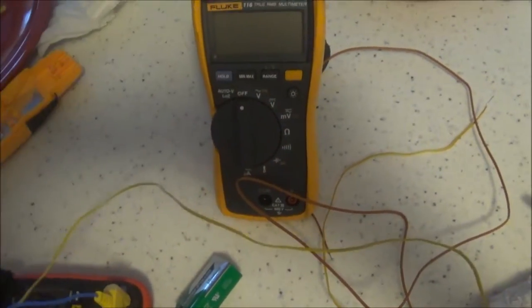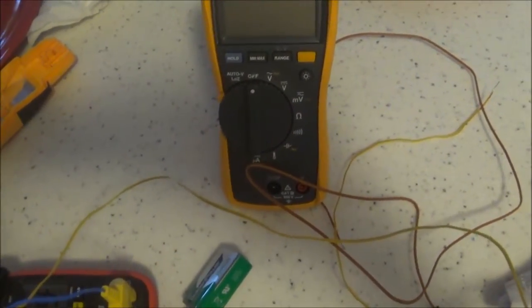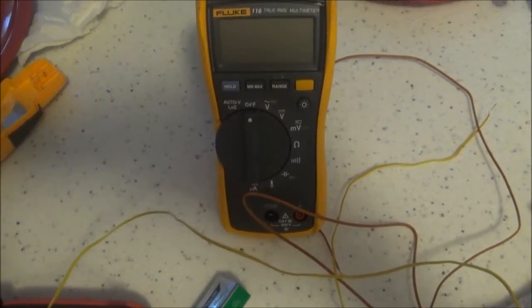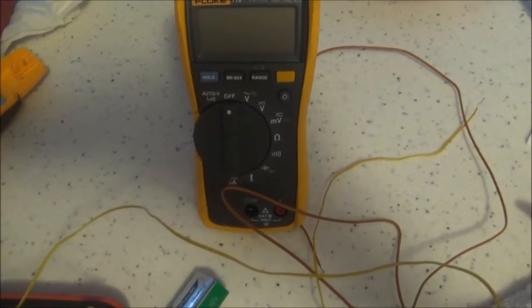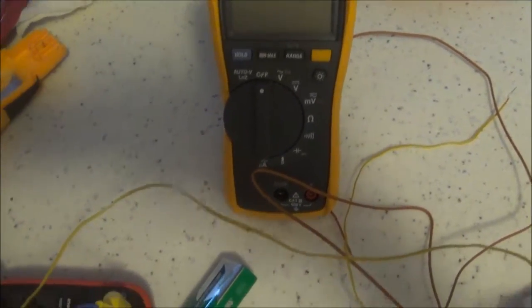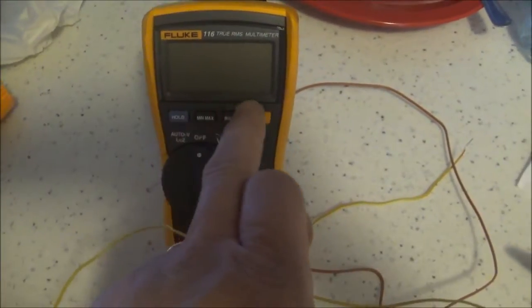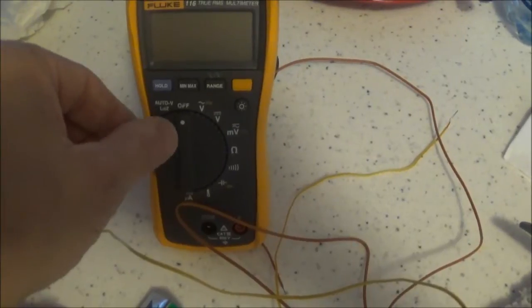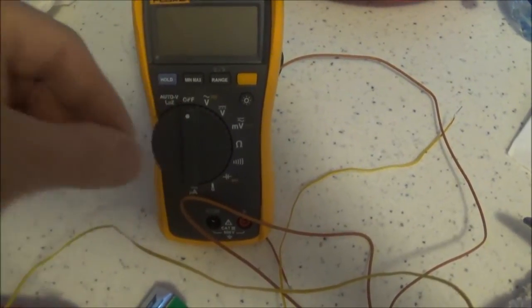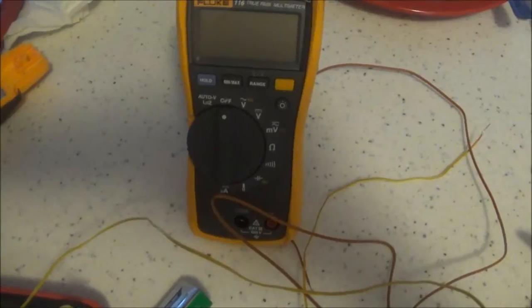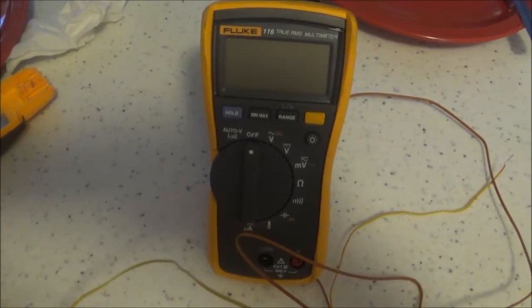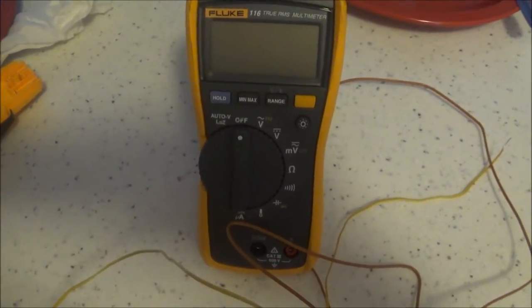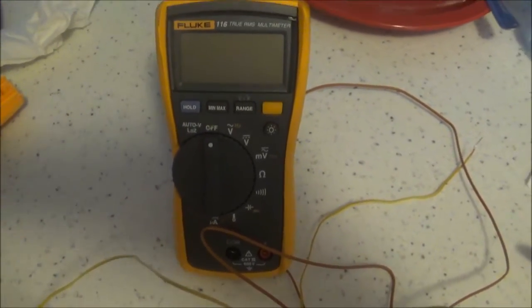This one actually, the Fluke itself reads kind of low, it reads like 31 and a half in the ice bath with its own leads. And there is a calibration procedure that I downloaded for it, and it's really in depth. It involves using these buttons to enter numbers and passwords, and you've got to turn it off, hold, turn it to a certain setting to put it in calibration mode. It's a real drawn out process, something that if you really took your time and had all the step by steps you could probably do it, but it's one of those things I'm not willing to do over half a degree.